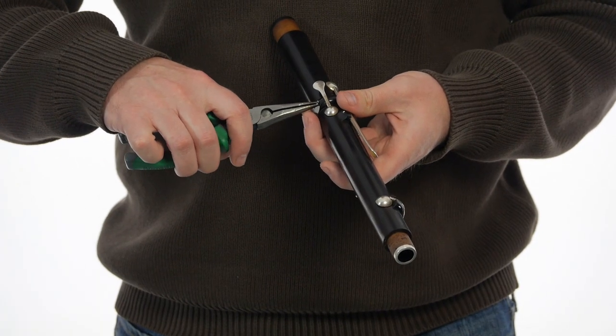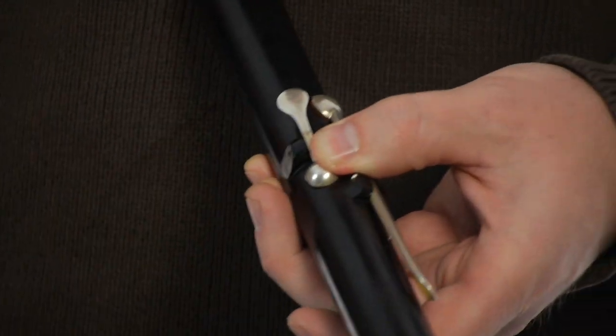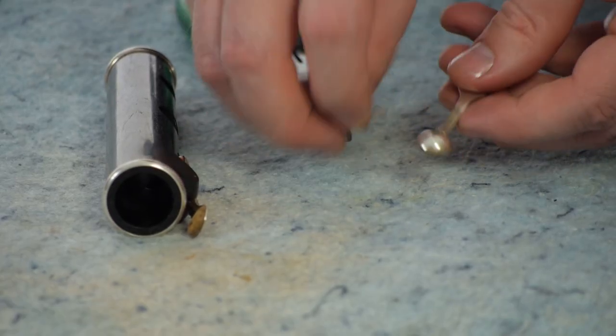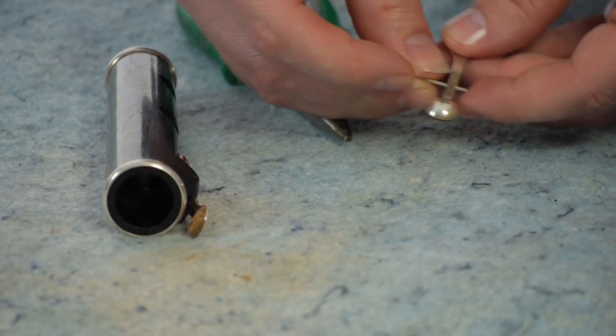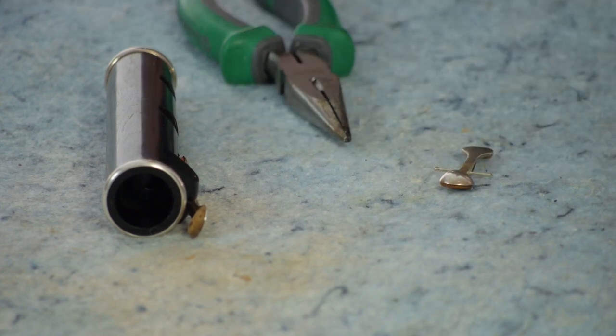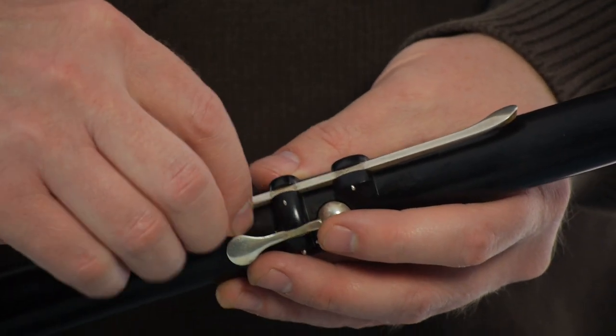For keyed flutes, you want to make sure that you don't get oil on the keypads. I prefer to take all the keys off as it makes working with the flute less cumbersome. Alternatively, you can cover the pads with plastic wrap.